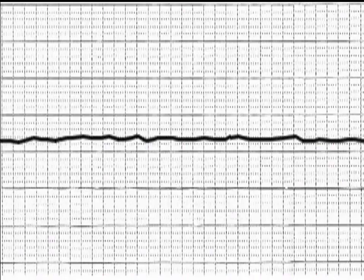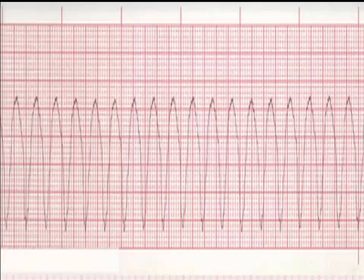This rhythm is asystole. This rhythm is ventricular tachycardia. The absence of P waves, the wide QRS, the rate greater than 150 beats a minute, and the regularity of the rhythm indicate ventricular tachycardia. This is different from sinus tachycardia, as sinus tachycardia has P waves. A sustained ventricular tachycardia burst could indicate significant ventricular irritability, and anti-dysrhythmic medication would be needed to prevent further episodes.